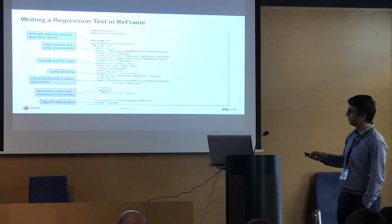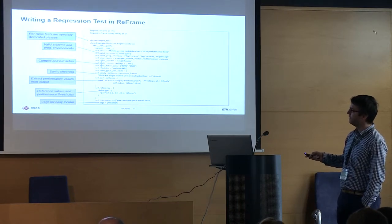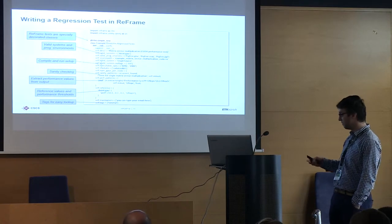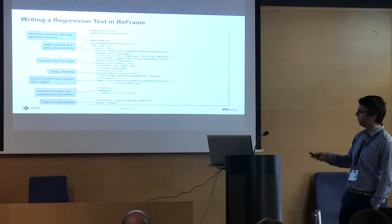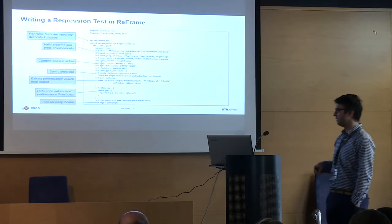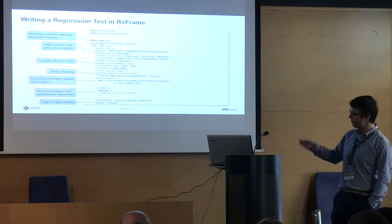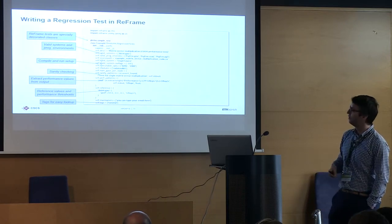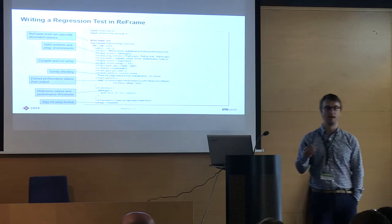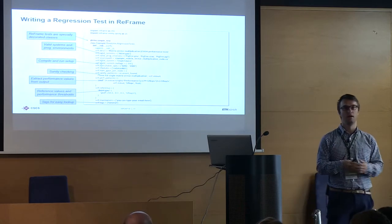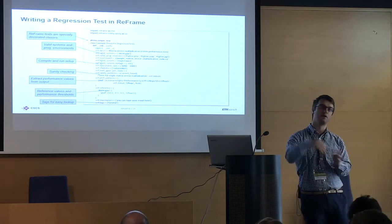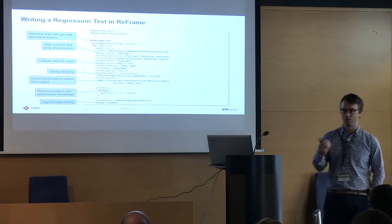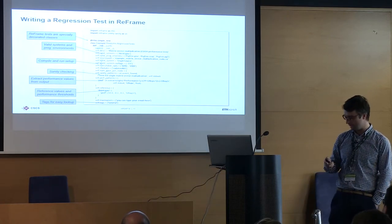Then comes the reference. You list all your systems and say: for Daint CPU, this performance variable must have a value of 50 gigaflops plus or minus 10%. You can also put special tags on your tests so that you can select them by grouping beyond just their name.